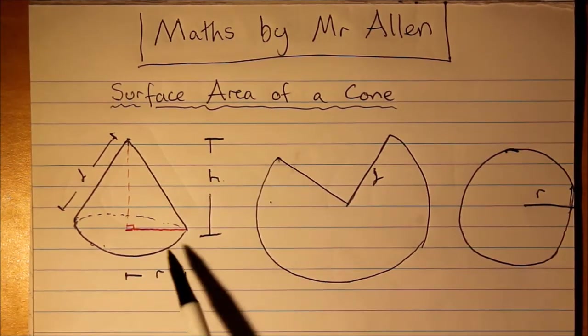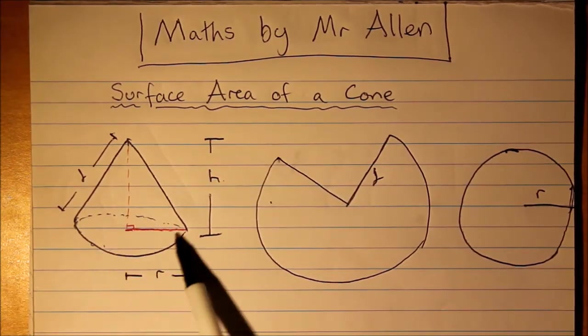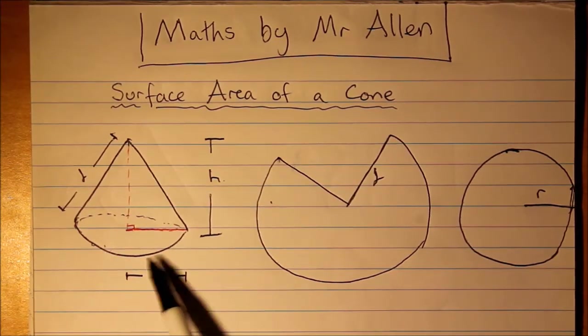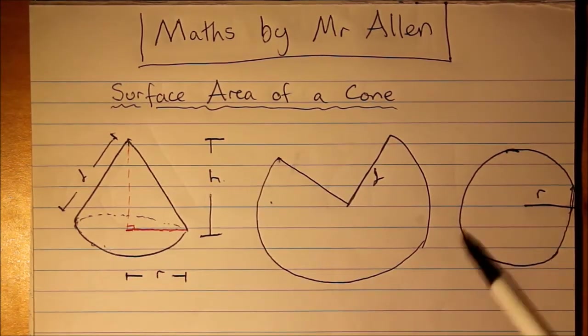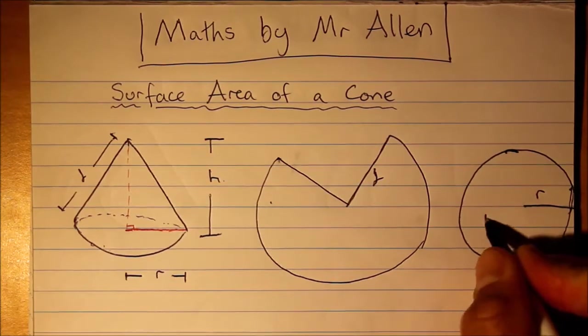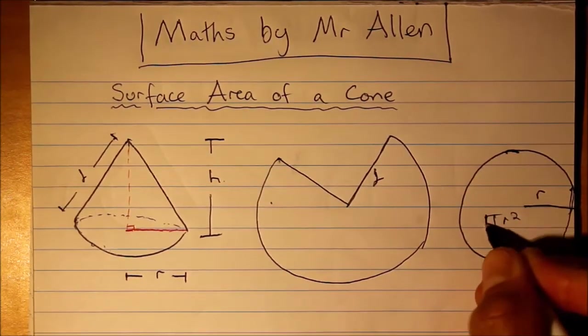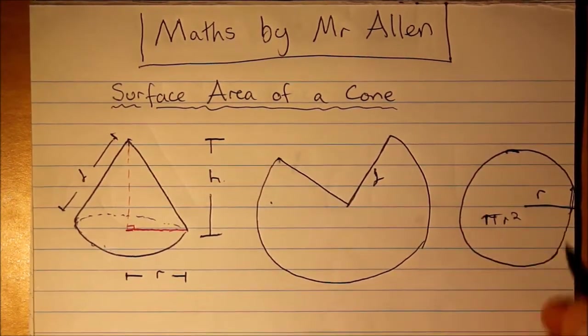So you can see at the bottom of this cone you have a circle. That's going to be πr². That bit.